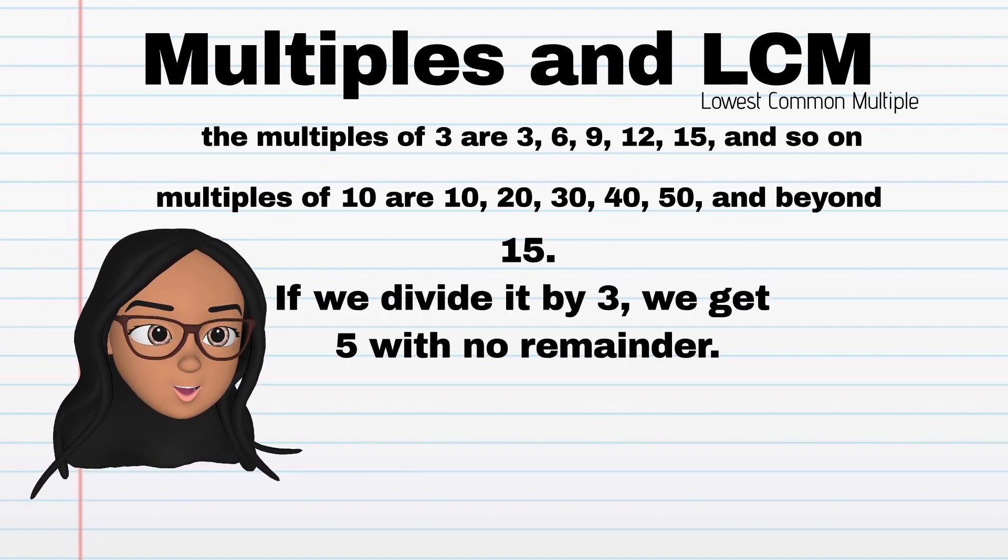For example, let's take the number 15. If we divide it by 3, we get 5 with no remainder. This tells us that 15 is a multiple of 3.